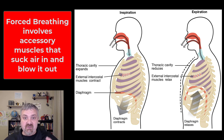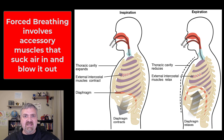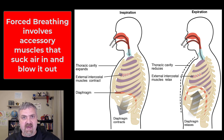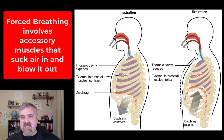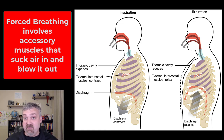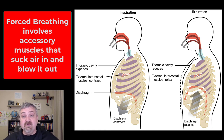Your abdominal muscles will contract and push the organs up into the diaphragm, which pushes the diaphragm up even harder — that's how you squeeze out more air. So normal quiet breathing only involves the diaphragm and the external intercostals, while forced breathing involves all of these accessory muscles of respiration: scalenes, internal intercostals, and abdominal muscles.